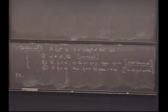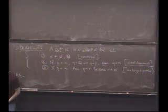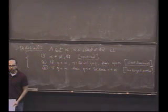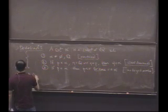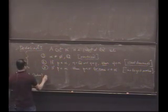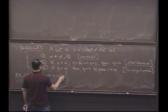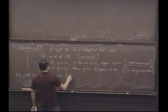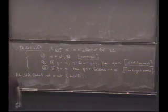So let's see some examples. So here's a question. Is the set A we defined before a cut? No. Which property does it not satisfy? A from before? The set A from before is not a cut. It does not satisfy two. Fails two. It's not closed downward.